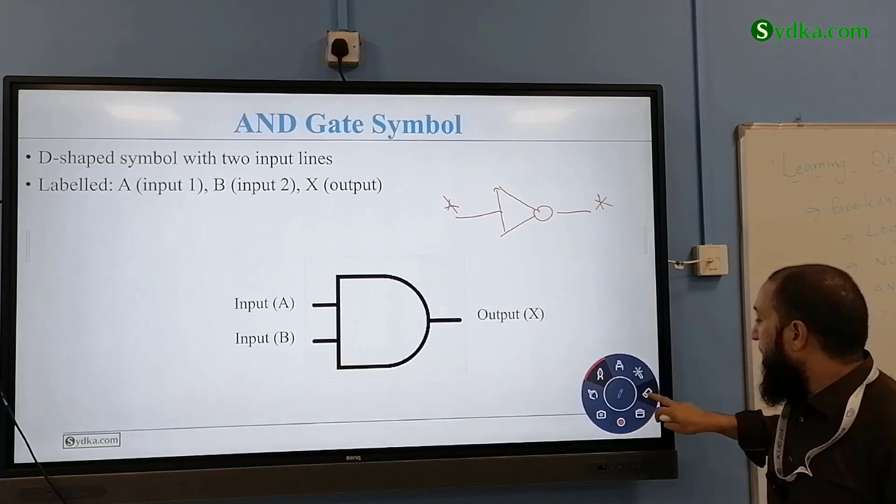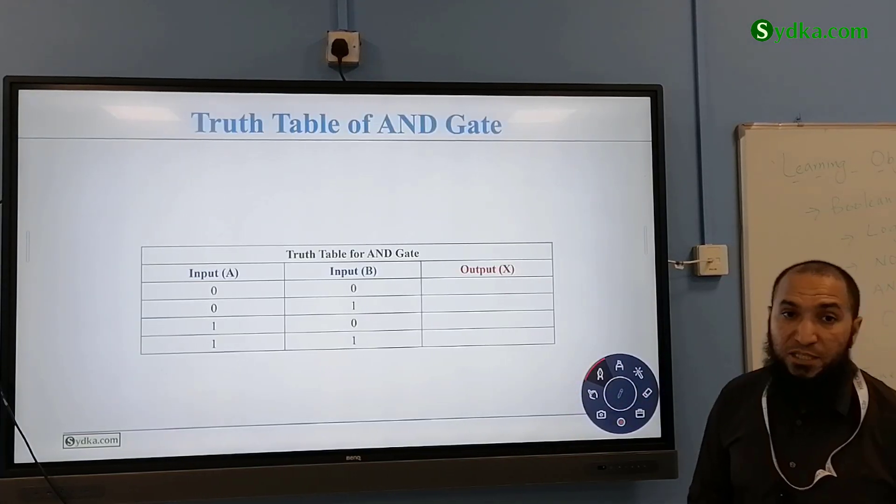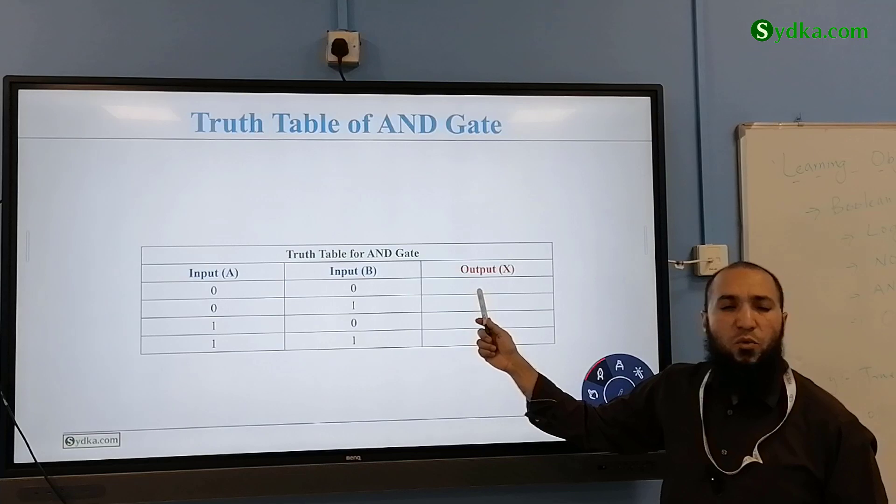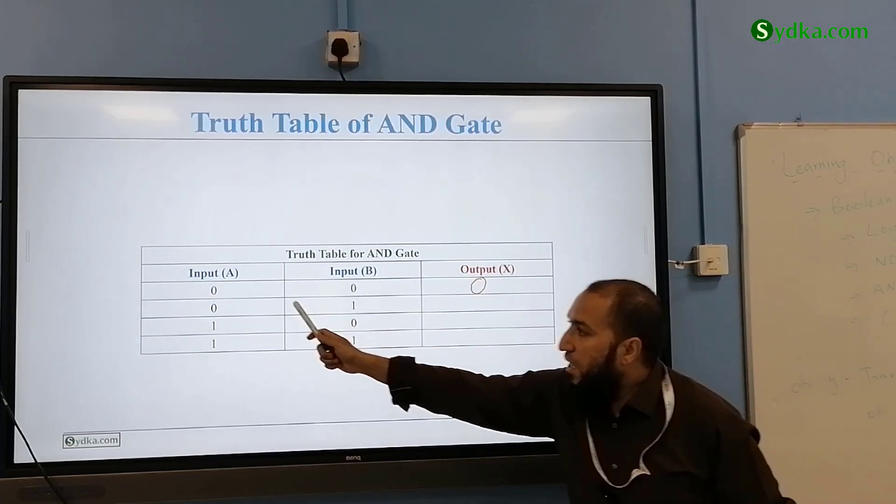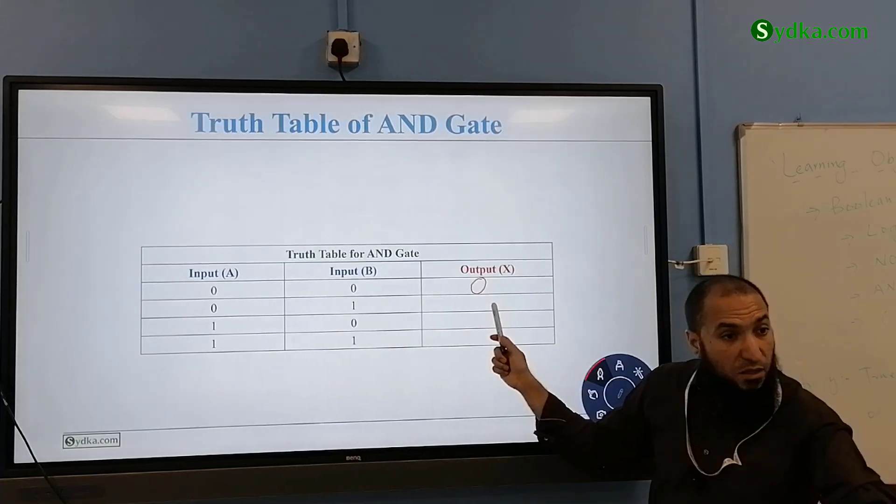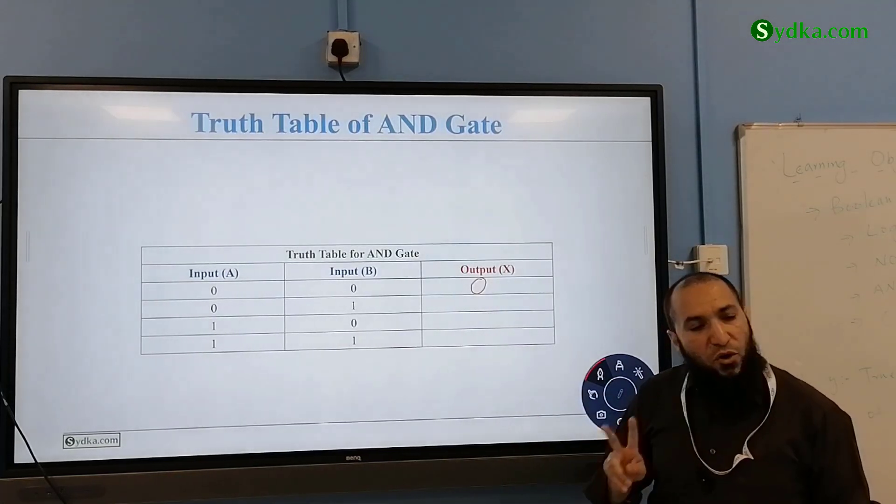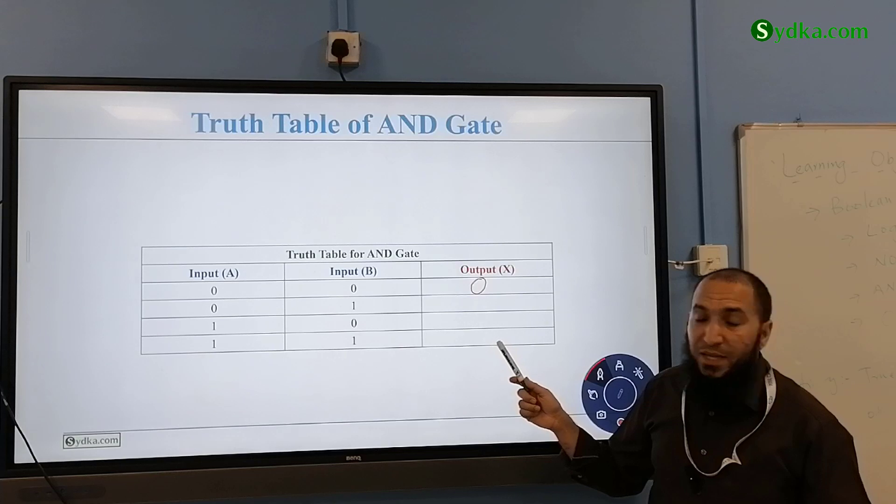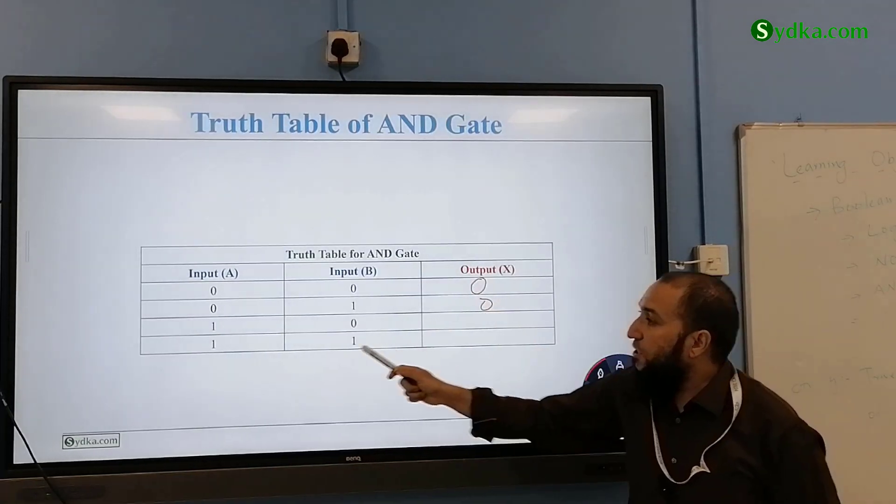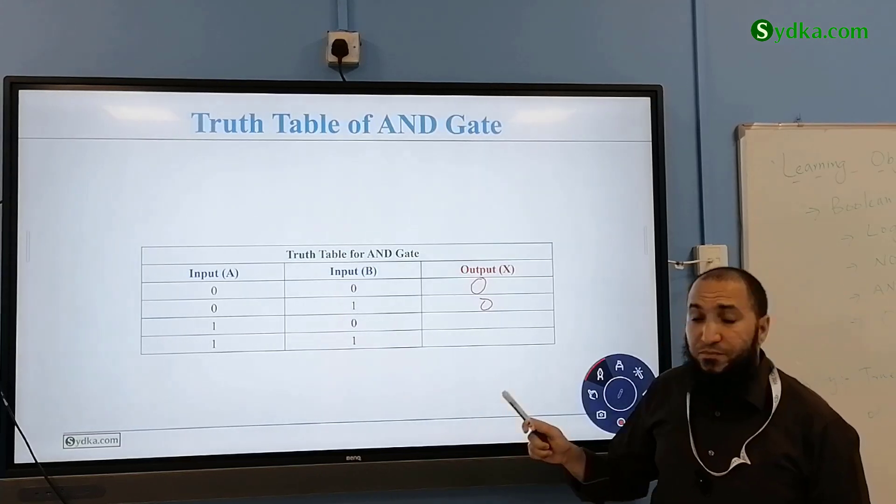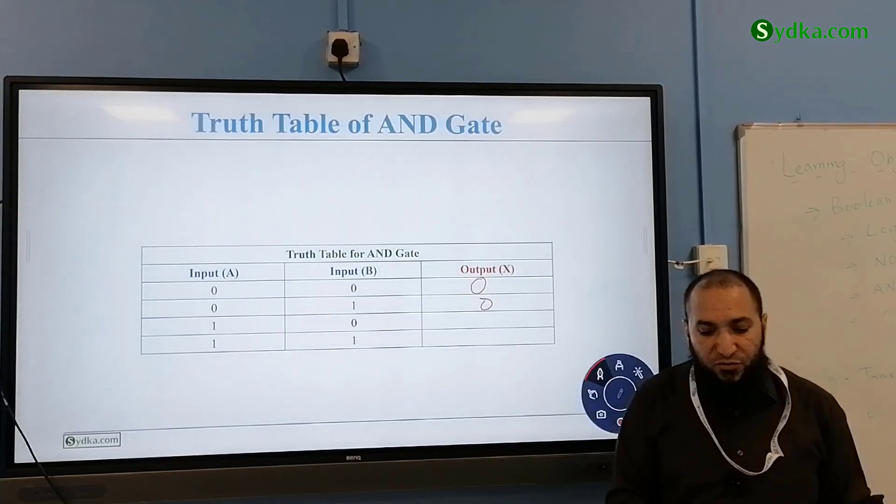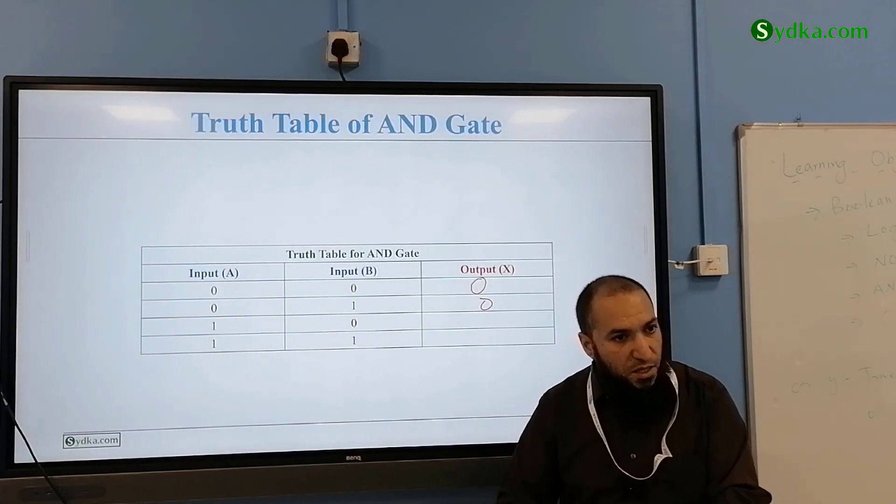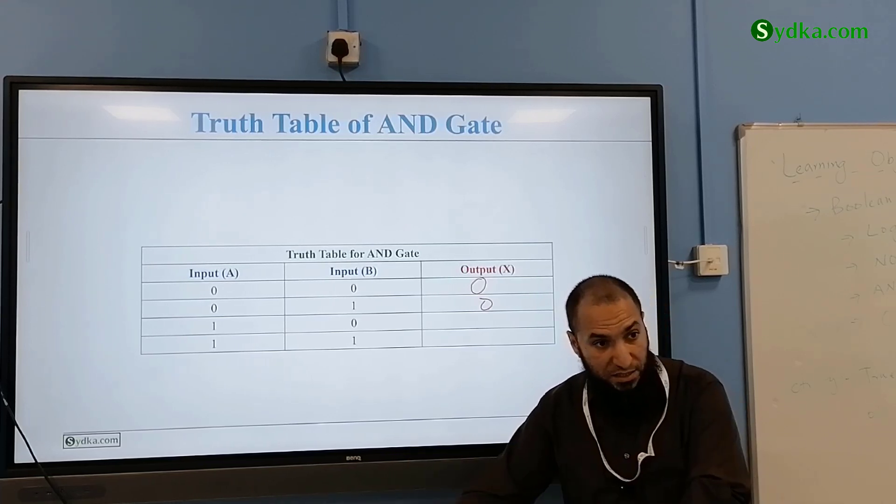Now the truth table here is important. How do you remember this? We have input zero and input zero, what should we expect? Zero. Zero and one? Zero. Because it's AND. When you want to make a water molecule, you have to have hydrogen molecule and oxygen. If one is missing, it has to be this AND this.